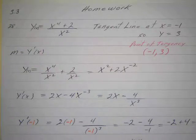Okay, this is 3.3 number 28, and we want to find the equation of the line that is tangent to this curve, y equals x to the fourth plus 2 over x squared, and we're looking for the tangent line when x is equal to negative 1.